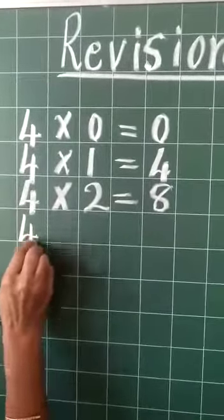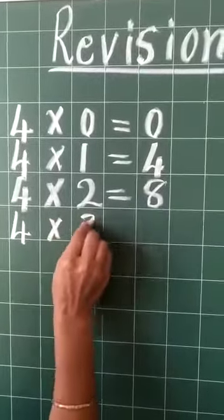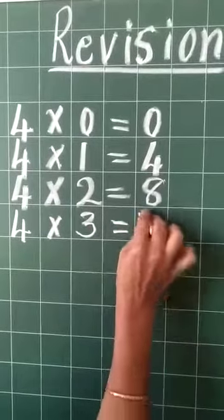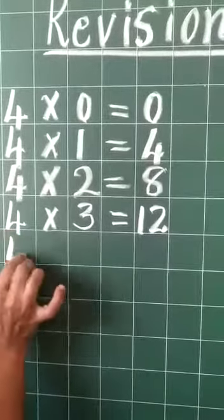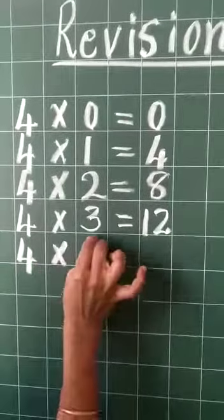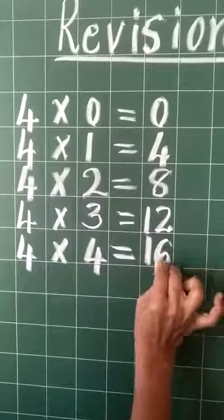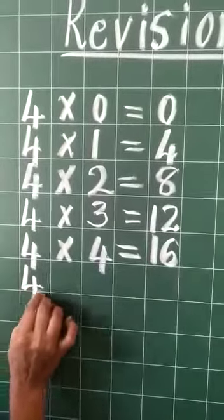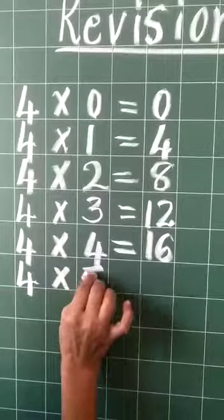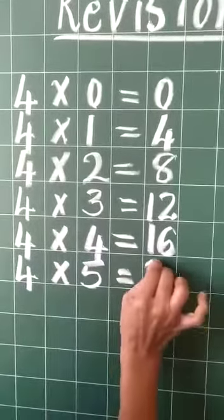4 times 3 equals 12. 4 times 4 equals 16. 4 times 5 equals 20.